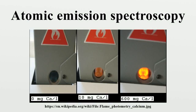Atomic emission spectroscopy is a method of chemical analysis that uses the intensity of light emitted from a flame, plasma, arc, or spark at a particular wavelength to determine the quantity of an element in a sample. The wavelength of the atomic spectral line gives the identity of the element, while the intensity of the emitted light is proportional to the number of atoms of the element.